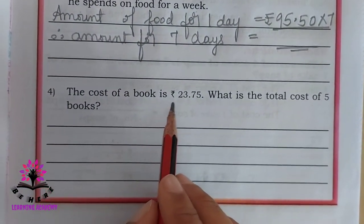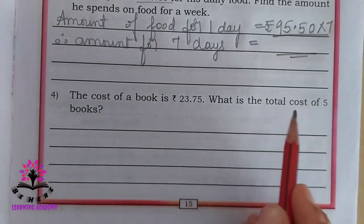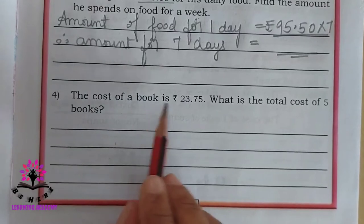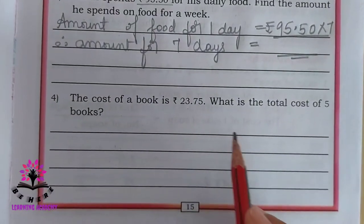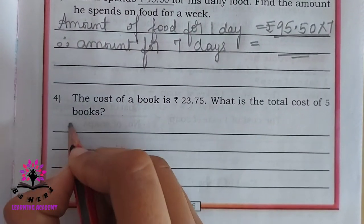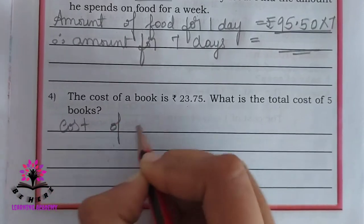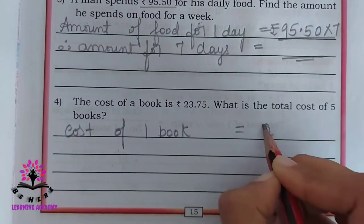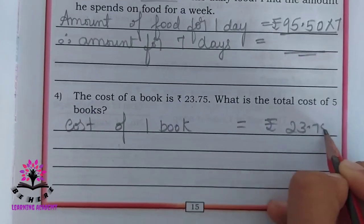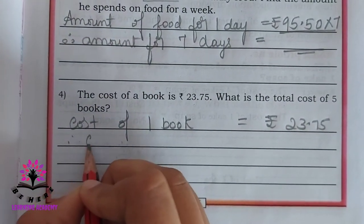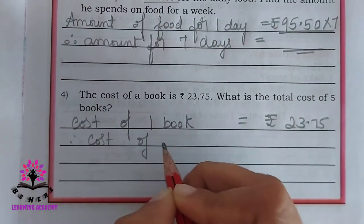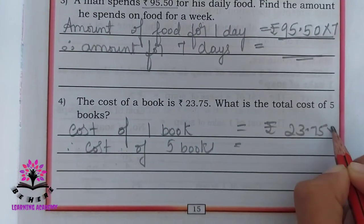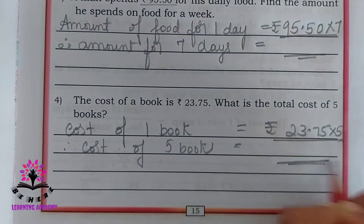Cost of a book is rupees 23, 75 paisa. What is the total cost of 5 books? You have to write cost of 1 book — it is rupees 23, 75 paisa. Therefore, cost of 5 books: multiply by 5 and write the answer here.